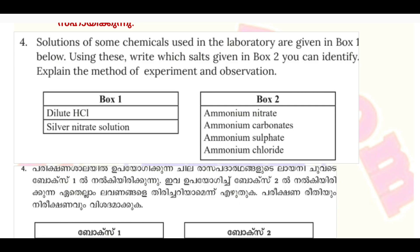The solutions of some chemicals used in the laboratory are given in Box 1: dilute HCl, hydrochloric acid, and silver nitrate solution. Using these, write which salt given in Box 2 you can identify. Box 2 contains ammonium nitrate, ammonium carbonate, ammonium sulfate, and ammonium chloride.